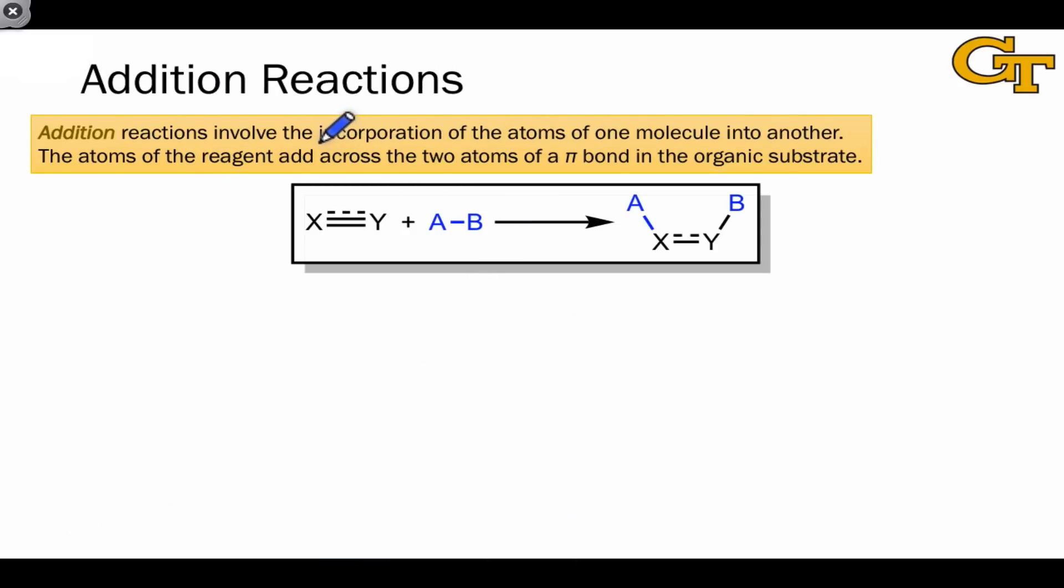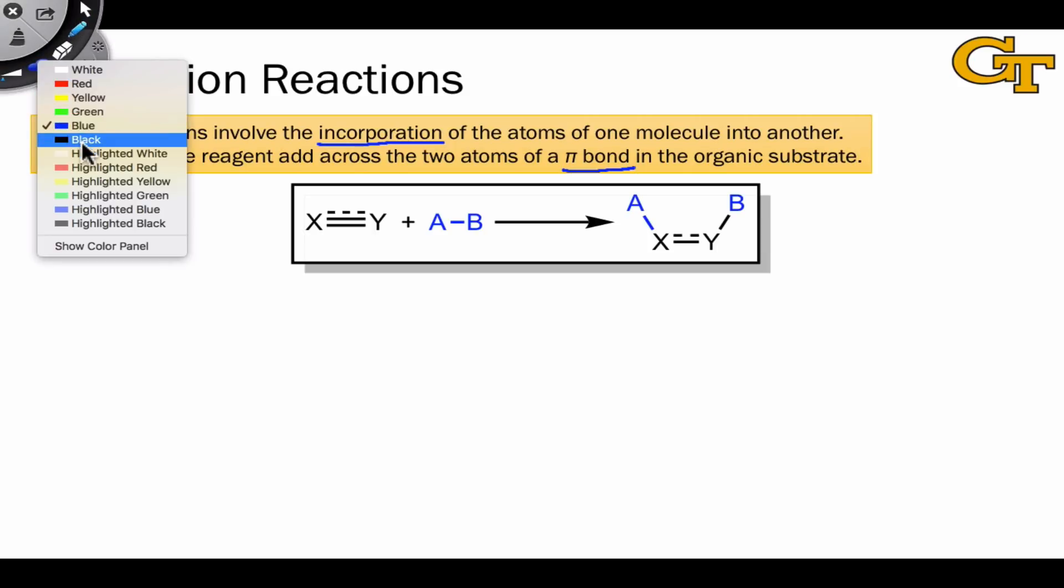Addition reactions involve the incorporation of the atoms of one molecule into another. In the organic substrate, a pi bond is always involved, so that the X and Y atoms in this general picture remain bound to each other after the addition. One of the pairs of electrons in one of the new bonds to either A or B comes from the organic substrate.